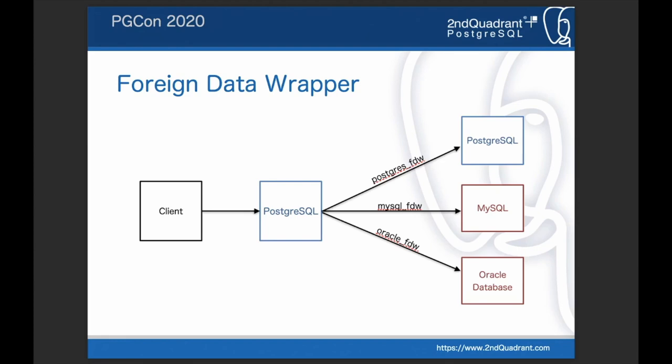This diagram shows an example of using three types of FDWs: PostgreSQL FDW, MySQL FDW, and Oracle FDW. When a client issues a query to the PostgreSQL server — I mean the left PostgreSQL server — this server connects to external data stores like another PostgreSQL server, MySQL, or Oracle database through the corresponding FDW plugins. In this talk, I'd like to focus on transaction management when using FDWs.